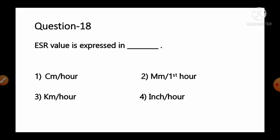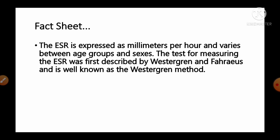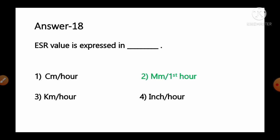Question number 18: ESR value is expressed in — options: 1) cm/hr, 2) mm/hr, 3) km/hr, 4) inch/hr. ESR is expressed as millimeter per hour and varies between age groups and sex. The test was first described by Westergren and Fahraeus and is well known as the Westergren method. So option number 2, millimeter per hour, is the correct answer.